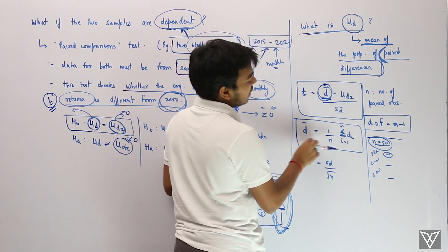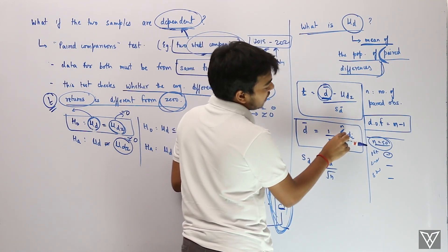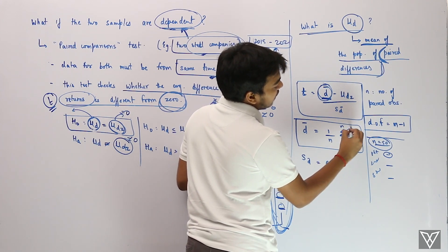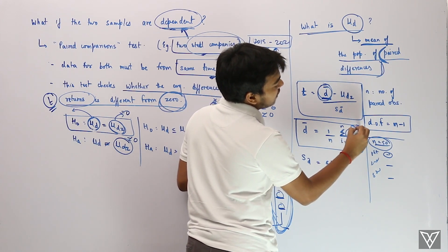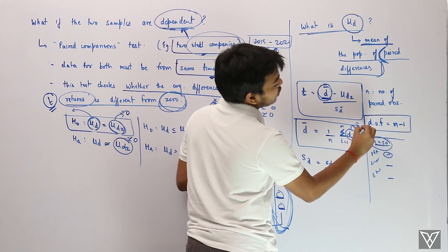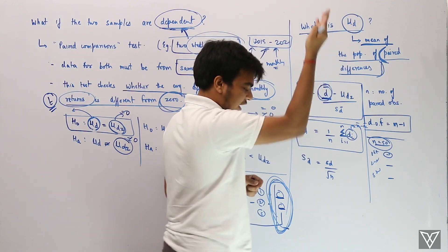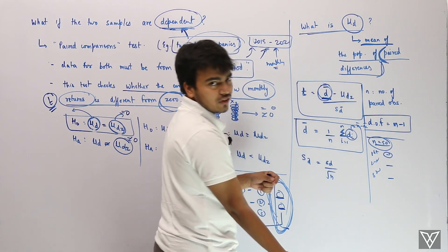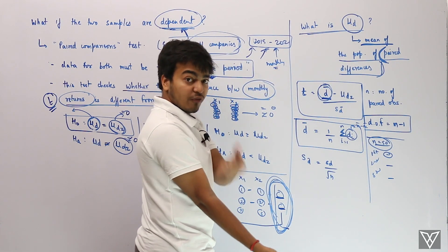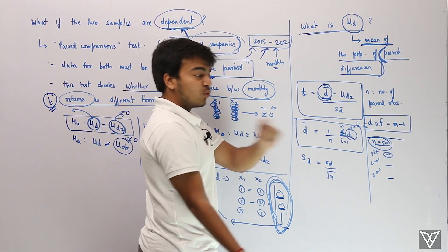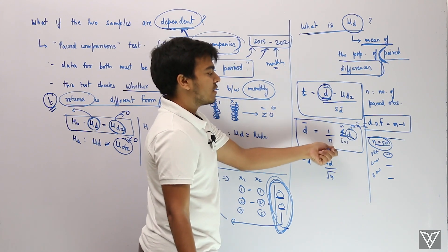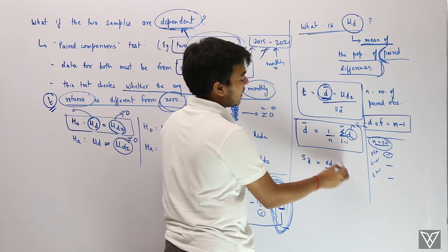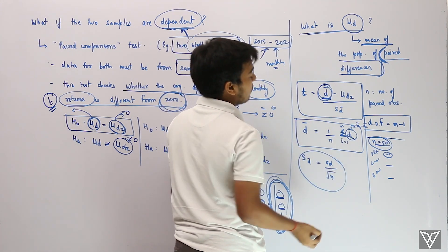D-bar is nothing but sigma d_i divided by n, where d_i is the difference between X1 and X2 for each observation. You compute differences for all observations, sum them up, and divide by n to get the average. The standard deviation of those differences is your denominator in the t-test formula.